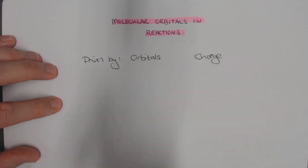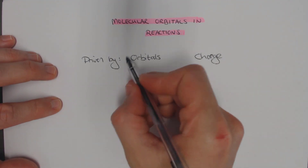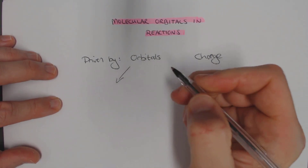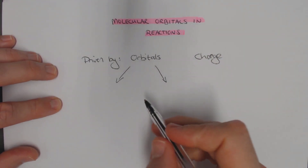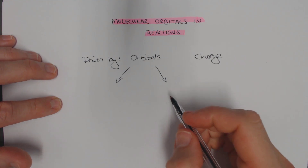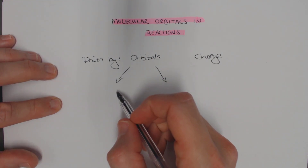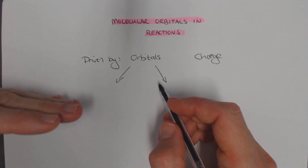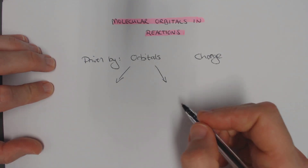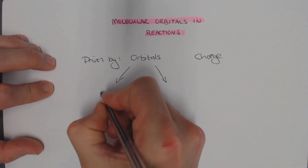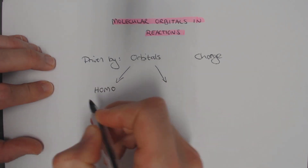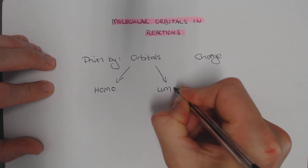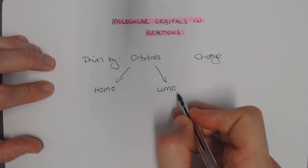It's the orbital aspects which haven't yet been discussed in your course, and this is what we're going to start dealing with. With regards to orbitals, there are two main orbitals that are important. We've started looking at molecular orbital diagrams, and it turns out that the most important orbitals are the frontier molecular orbitals — the HOMO, which is the highest occupied molecular orbital, and the LUMO, which is the lowest unoccupied molecular orbital.